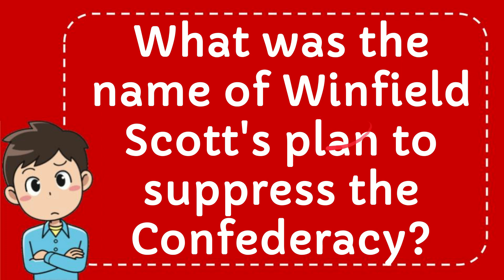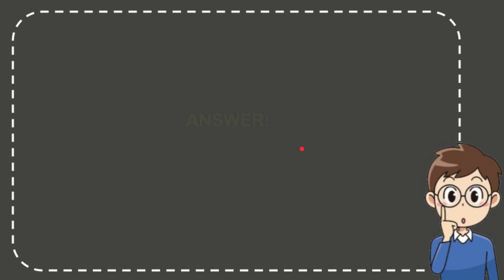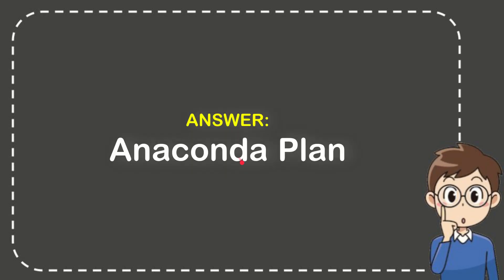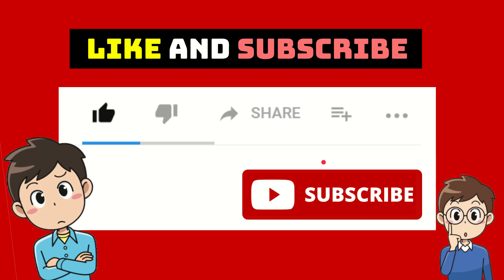In this video I'm going to give you the answer for this question. The question is what was the name of Winfield Scott's plan to suppress the Confederacy. The correct answer for the question is the Anaconda Plan, that's the answer.